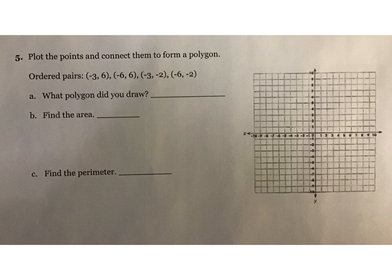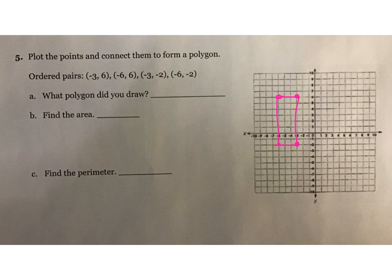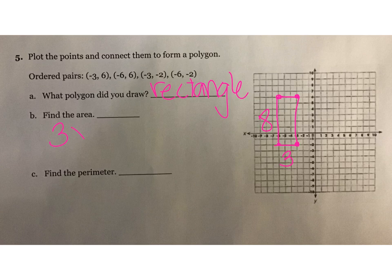Go ahead and do the graph for the next one — graph it, find the polygon, and find your area and perimeter. The points are negative 3, positive 6; negative 6, positive 6; negative 3, negative 2; and negative 6, negative 6. Go ahead and graph all four points and connect them — that's also going to be a rectangle. It is 3 by 8, giving me 24 units squared. Perimeter: 8 plus 8 plus 3 plus 3 is 6 plus 16, giving me 22 units.